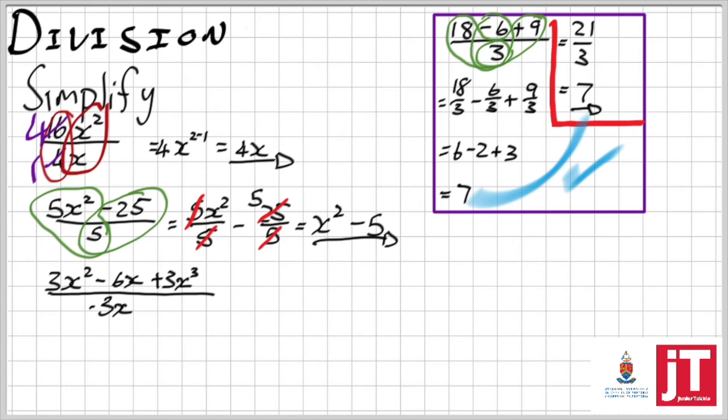The last one is a typical exam question. I love to ask this, but all I have to do is again split it up. So I'm going to take the 3x squared and divide it by negative 3x. Then I'm going to take the negative 6x and divide it by the negative 3x. And then I'm going to say well, positive 3x cubed over negative 3x.